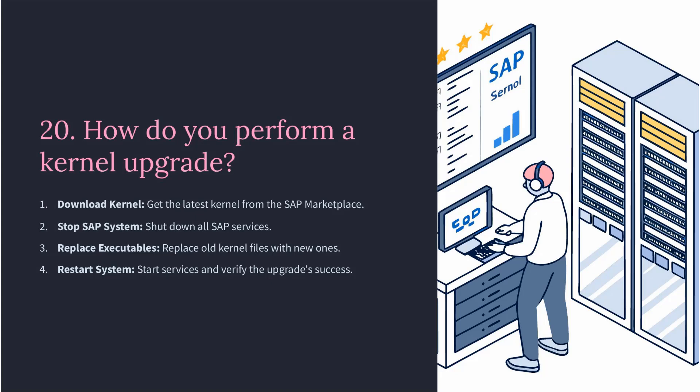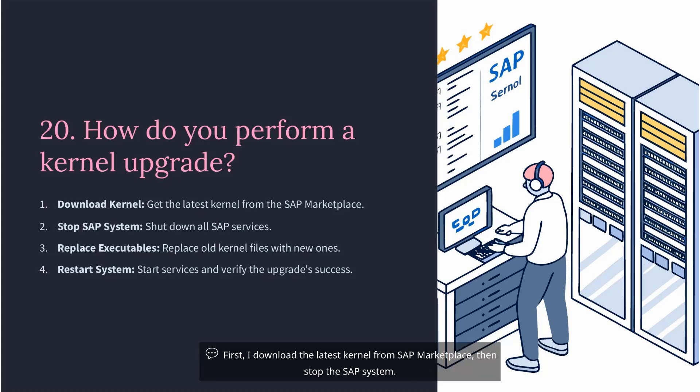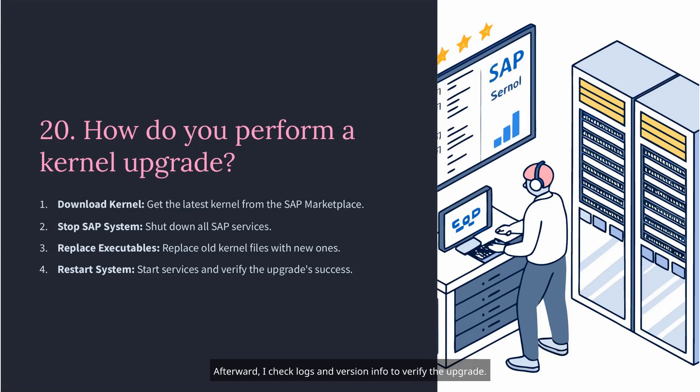Question 20: How do you perform a kernel upgrade? First, I download the latest kernel from SAP Marketplace, then stop the SAP system. I replace the old kernel executables with the new ones, adjust permissions, and restart the system. Afterward, I check logs and version info to verify the upgrade.